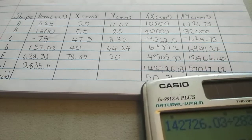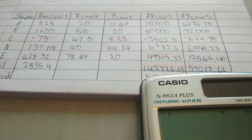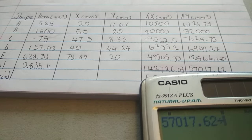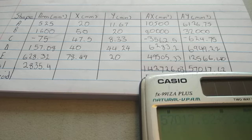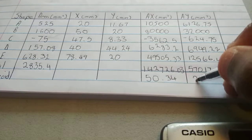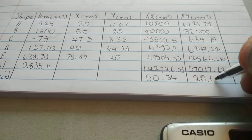And then, we're going to do the same for this side. We're going to say 57017.62 divided by 2835.4. We'll get 20.1. There it is, 20.11.